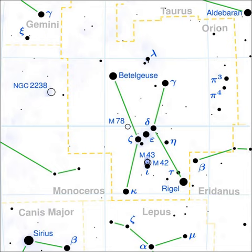Mu Orionis Ba and Bb are F5V dwarfs with 1.4 solar masses and apparent magnitudes of 6.91. They are separated from each other by 0.078 AU.